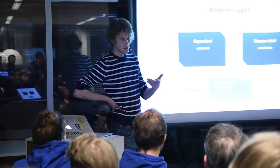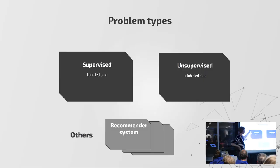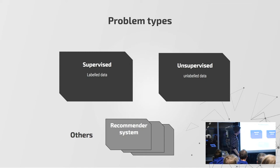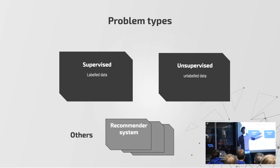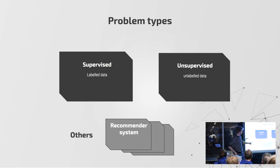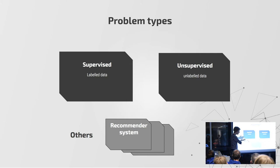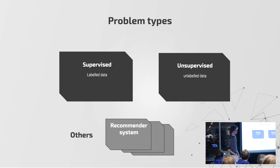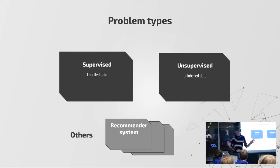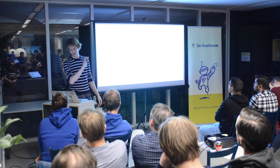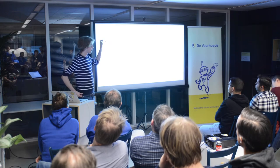This email problem would be a case of supervised learning, where you have labels with your data — email is spam or not spam. Then there's another broad set of problems which would be unsupervised learning, and there are somewhat smaller problem sets like recommendation systems: maybe you also like this movie, or people who bought this also bought that.